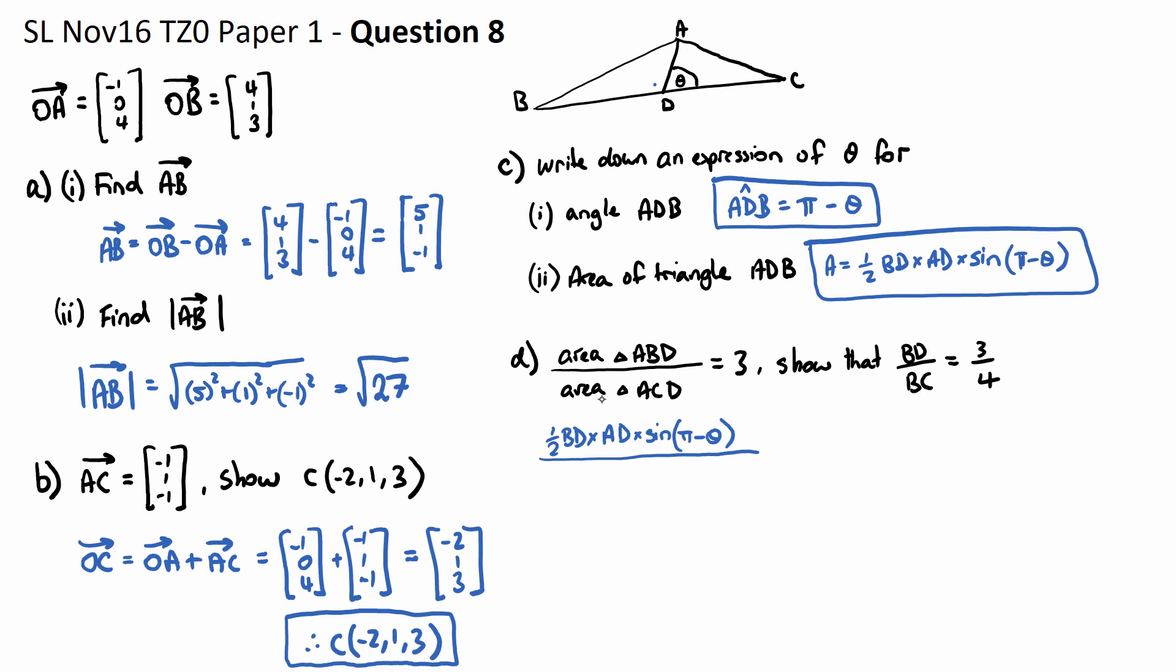Now we need an expression for the area of ACD, which is this triangle over here. Now I'm just going to use our angle as theta. So it's going to be a half times the two side lengths. So I'm going to use DC and DA, which is the same as AD, and then sine of the angle between them, which is sine of theta.